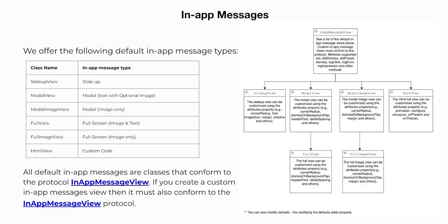The Braze UI library offers certain default in-app message types — for example, SlideUp View, Modal View, and HTML View. All default in-app messages are classes that conform to the in-app message view protocol. If you create a custom in-app message view, it is important that your custom view also conforms to the in-app message view protocol. You can find more information about the in-app message view protocol by clicking on the link on this slide.